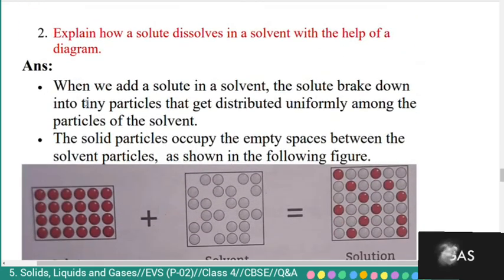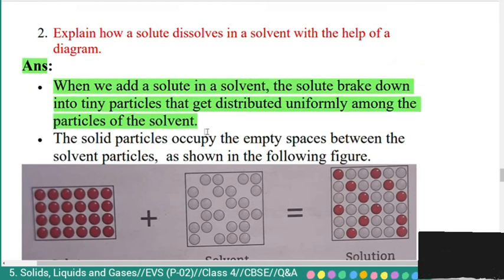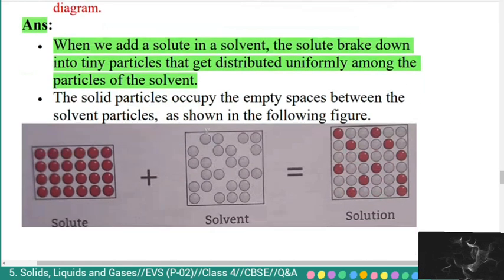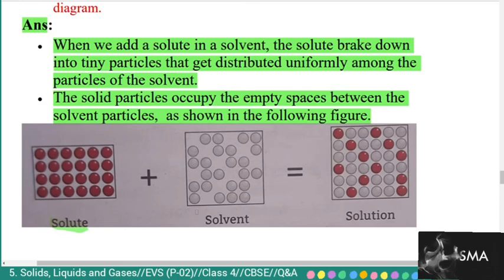Question: explain how a solute dissolves in a solvent with the help of a diagram. Answer: when we add a solute to a solvent, the solute breaks down into tiny particles that get distributed uniformly among the particles of the solvent. The solute particles occupy the empty spaces between the solvent particles. Together, they form a solution.